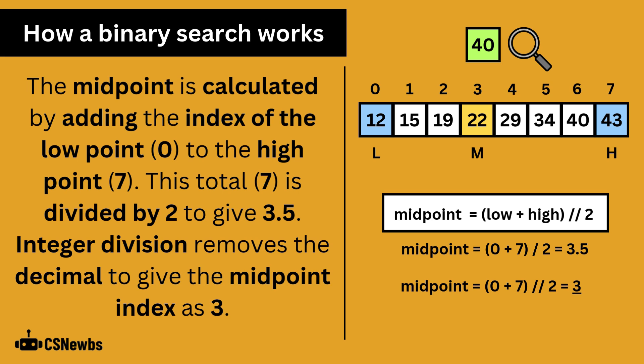0 plus 7 is 7. Divide this by 2 is 3.5. Integer division removes any decimal places after division and that becomes 3. So the midpoint is 3, which is 22.